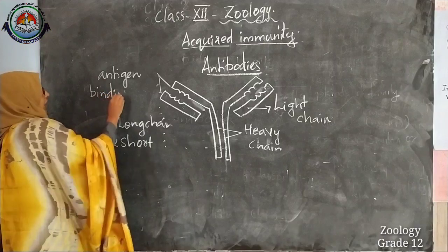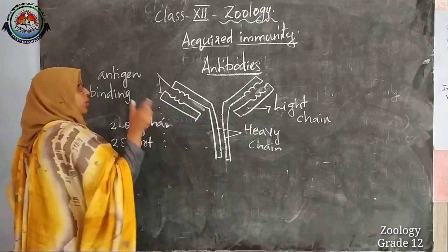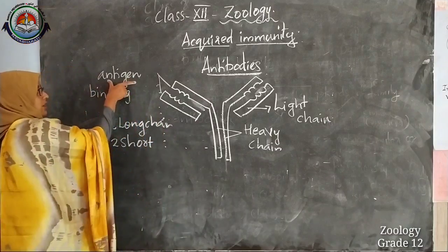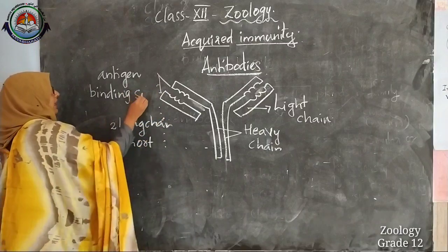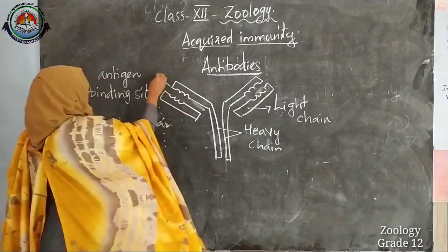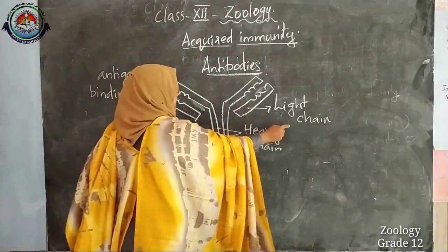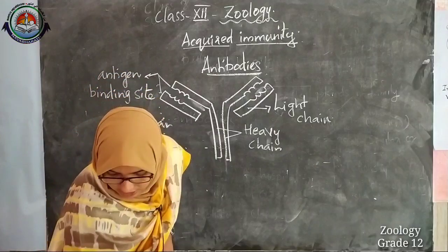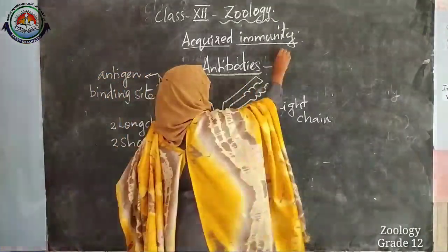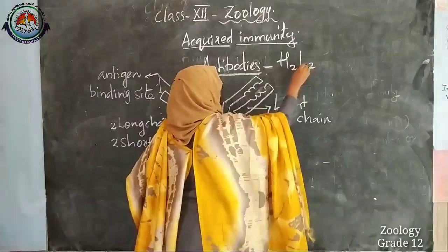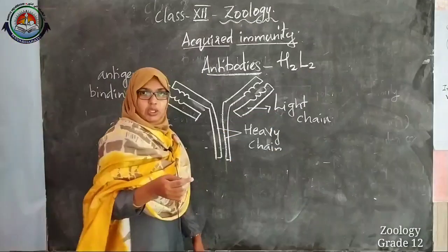An antigen is a foreign particle entering our body — biologically it is known as an antigen. This is the antigen binding site on the antibody. These two are the light chains and these are the heavy chains. We can represent an antibody as H2L2 — two heavy chains and two light chains.